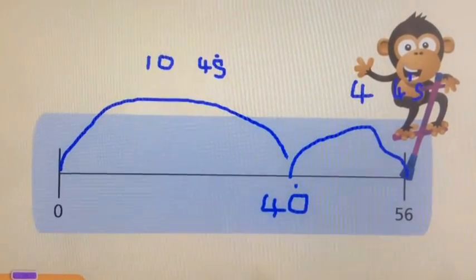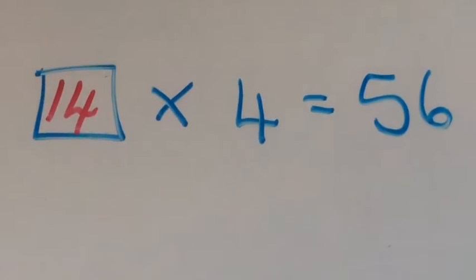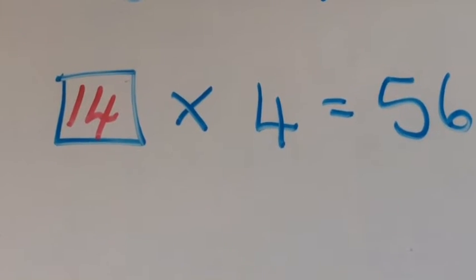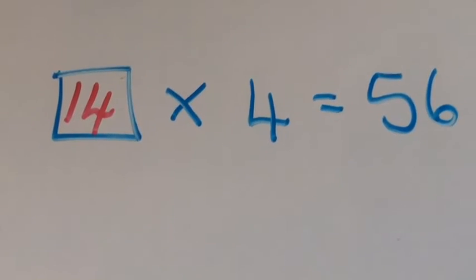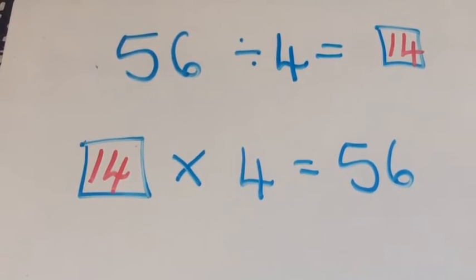So ten fours and then four fours makes 14 fours. Right, we've just worked out that 14 fours are 56. And that means 56 divided by four must be 14.